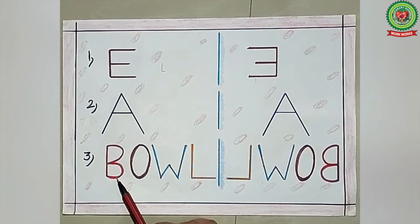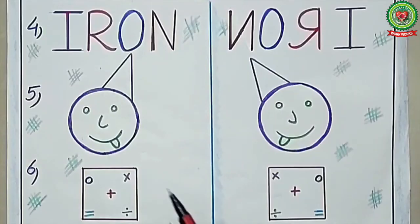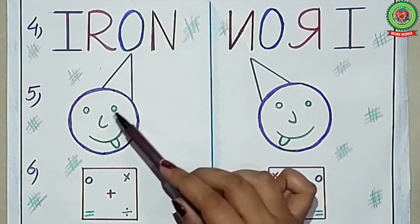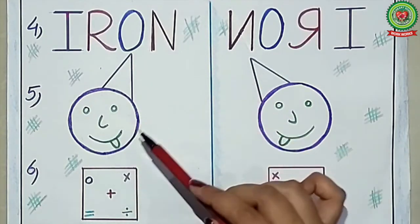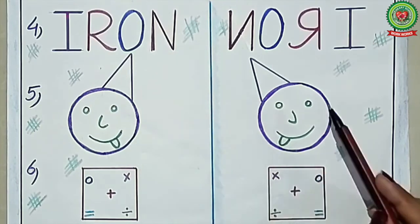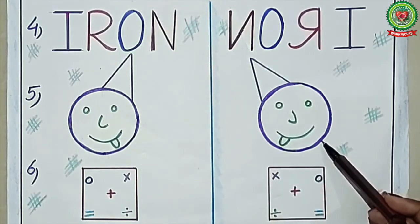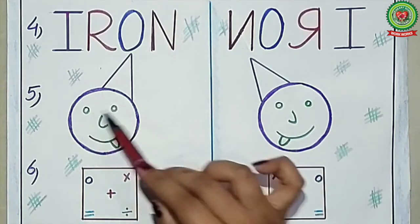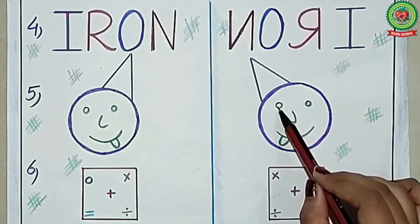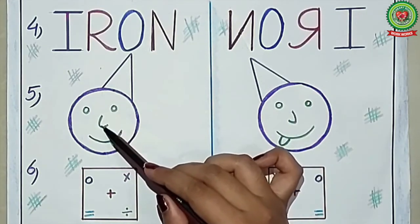In the next example, there is a face. The circle is symmetrical, so the image of the circle is the same. Eyes are symmetrical, so the eyes' image is the same.